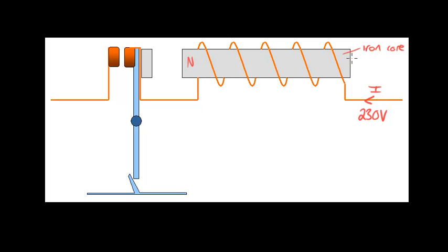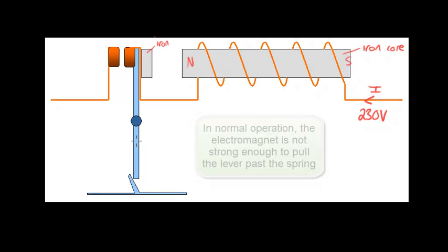That might be a north pole, that might be a south pole, and this electromagnet will try to attract any other magnetic material. Here is another piece of iron which is connected to a lever.